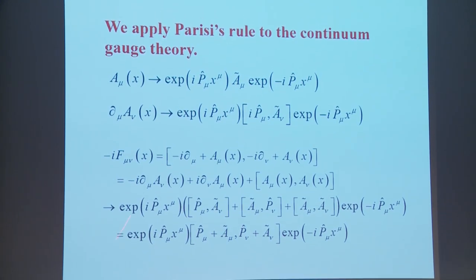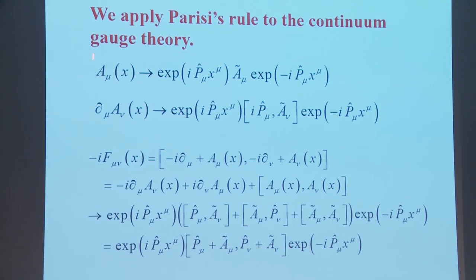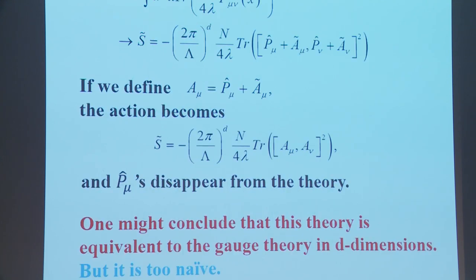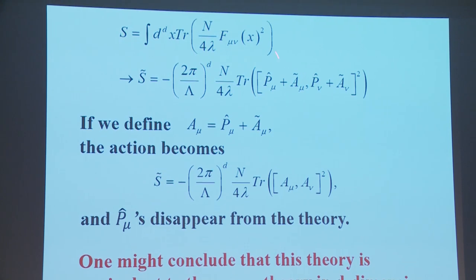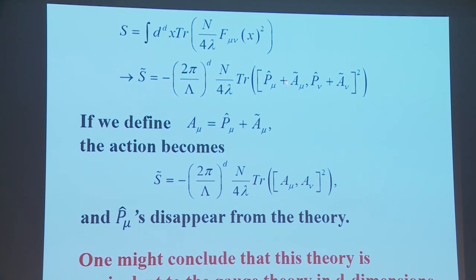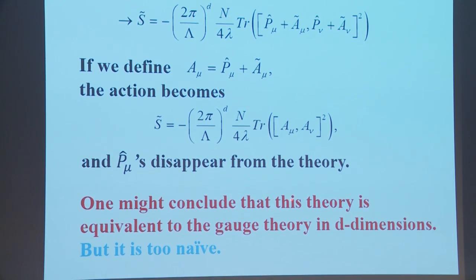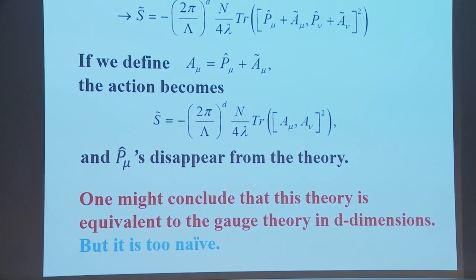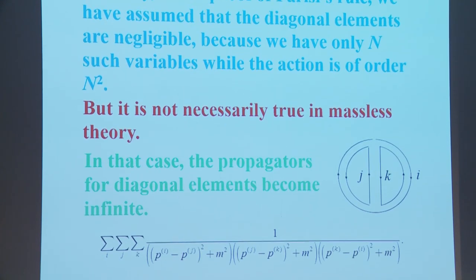We apply Parisi's rule to continuum gauge theory by replacing A_μ with an expression involving matrices Ã_μ. After some manipulation, the field strength is replaced by [P+A_μ, P+A_ν] sandwiched by exponential factors. If we define the combination P+Ã_μ as A_μ, the action takes a simple form and the P_μ's disappear from the theory. One might conclude this theory is equivalent to gauge theory in d dimensions, but that is too naive.